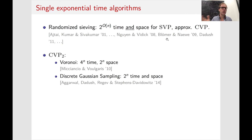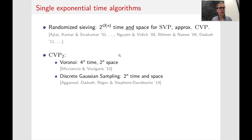Subsequently there has been a lot of work to extend this randomized sieving algorithm to work for any norm and to bring down the constant in the exponent. The currently fastest algorithms for CVP with respect to L2 are not based on randomized sieving and run in time 2^n. There have been two very cool algorithms: one based on the Voronoi cell and the other based on discrete Gaussian sampling. Both solve CVP with respect to L2 exactly — exact CVP is not known for general LP norms in single exponential time.